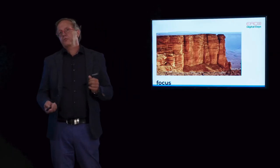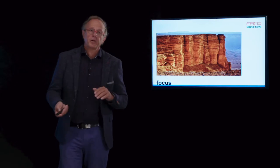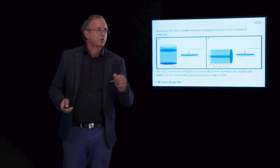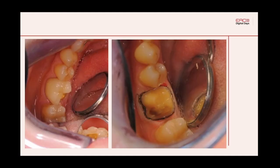We also looked at whether to print horizontally or vertically. It might seem logical, but research is needed to prove it: horizontally built objects are stronger than vertically built ones because the shear strength of vertically built objects is a little less.